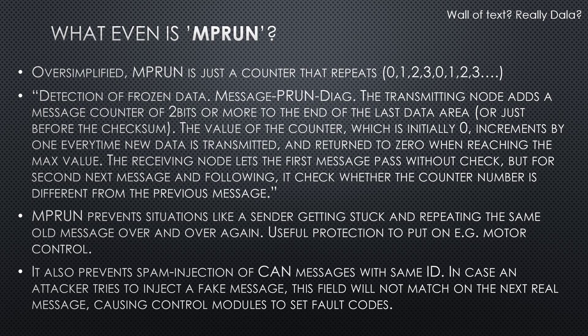What even is MRUN? Basically it's just a counter that counts 0, 1, 2, 3, 0, 1, 2, 3 for as long as the messages are being sent. Each time a message is sent, it gets incremented, and the receiving module checks that the counter was successfully incremented on each receive event. The general idea of MRUN is to prevent frozen data — if the sender gets corrupted and starts repeating the same old message, the receiver can detect this fault by looking at the MRUN counter. Another thing MRUN prevents is flooding the bus with malicious payloads.